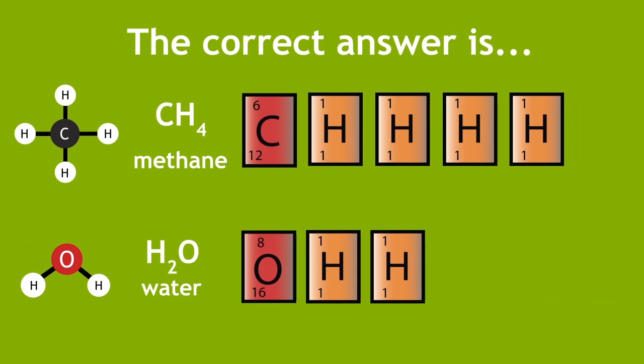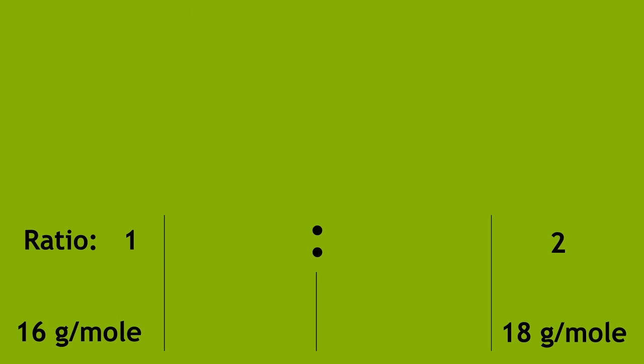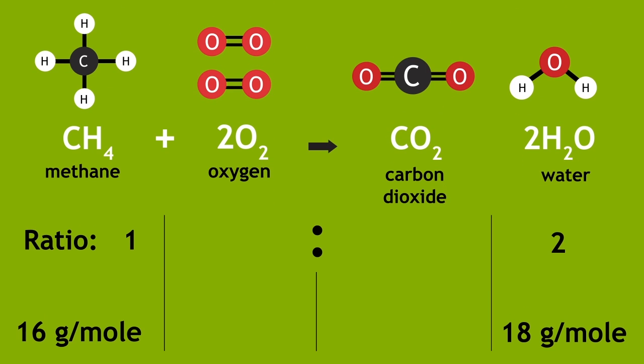The correct answer is 16 grams per mole for methane and 18 grams per mole for water. It's useful when doing this type of problem to record the molar masses and their ratio underneath the equation as you go through the steps.